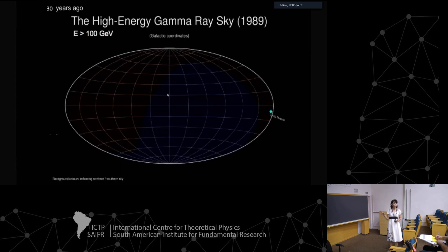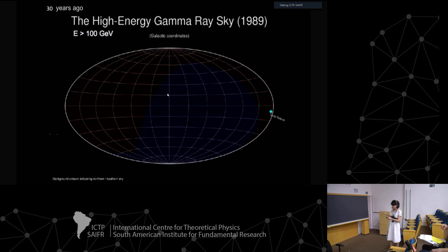30 years ago, this was the high-energy gamma-ray sky, with a single source - the Crab Nebula and the Crab Pulsar.